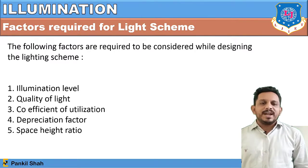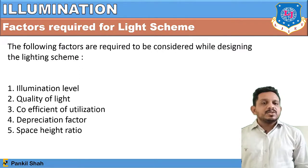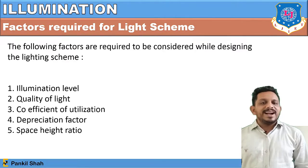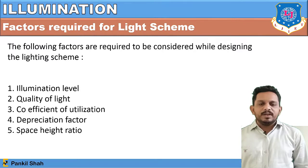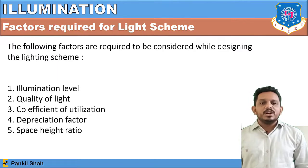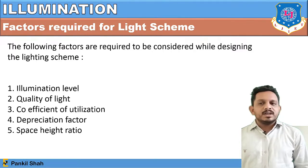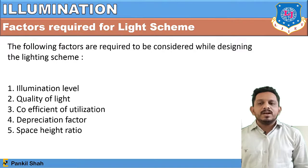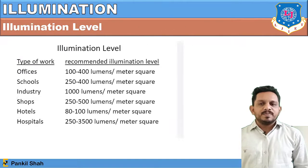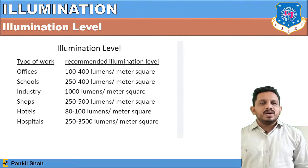To know which lighting scheme to use in which place, certain factors must be considered when designing a lighting scheme: illumination level — how much illumination is occurring; quality of light; coefficient of utilization; depreciation factor — how much is not being utilized; and the space-to-height ratio. All these factors must be kept in mind when designing a lighting scheme.